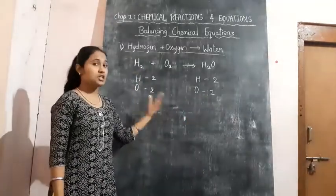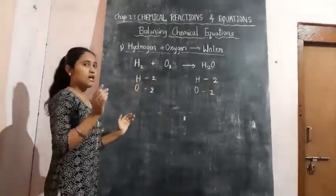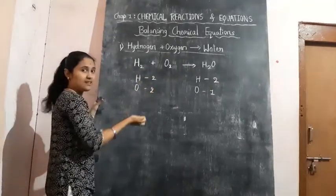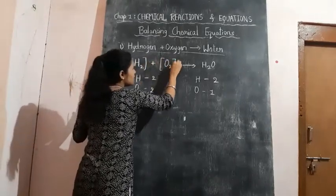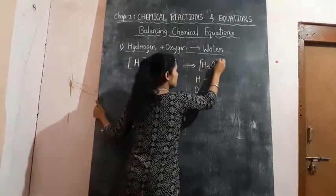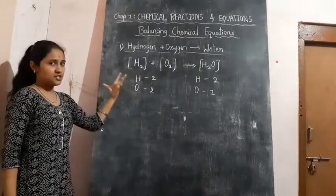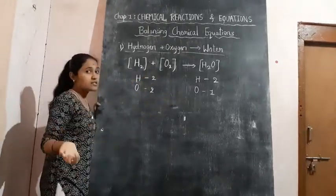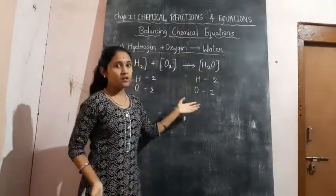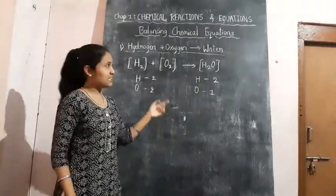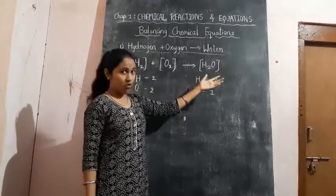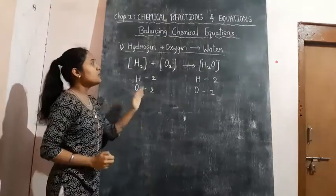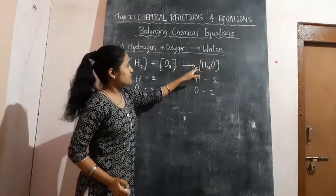We need to balance the oxygen. Before balancing, an important rule: for all these elements and compounds, you need to put a bracket. This is just for the purpose of balancing. If we need to change or balance the equation, we are not supposed to do anything inside this bracket — we cannot change the subscripts. For example, we cannot write H₂O₂ or H₃O or H₄O — those would be different compounds entirely. Whatever changes we need to make must be done in front of the bracket, at the start of the compound.